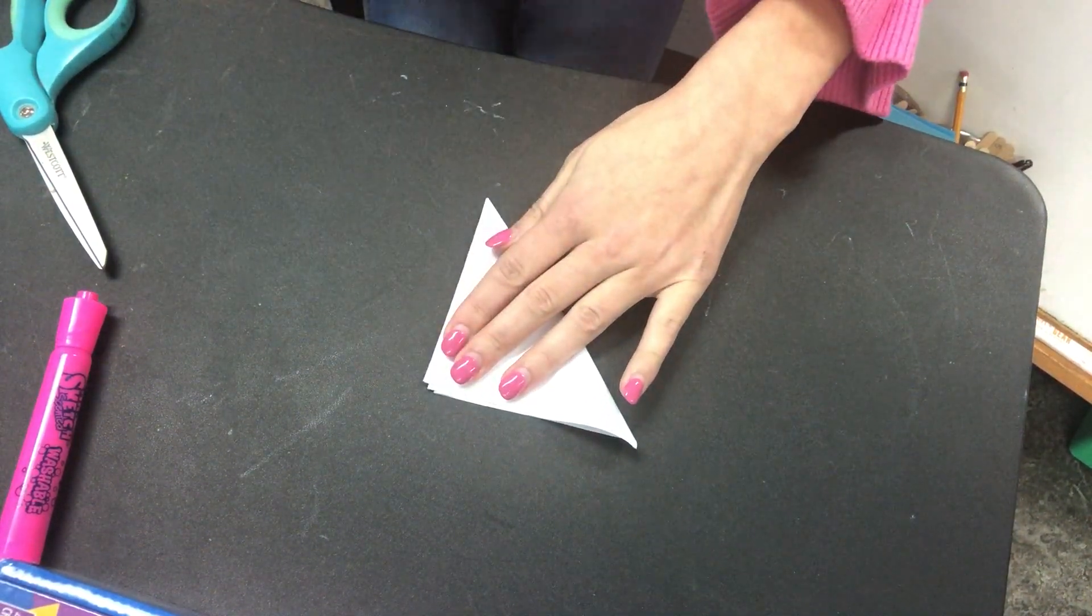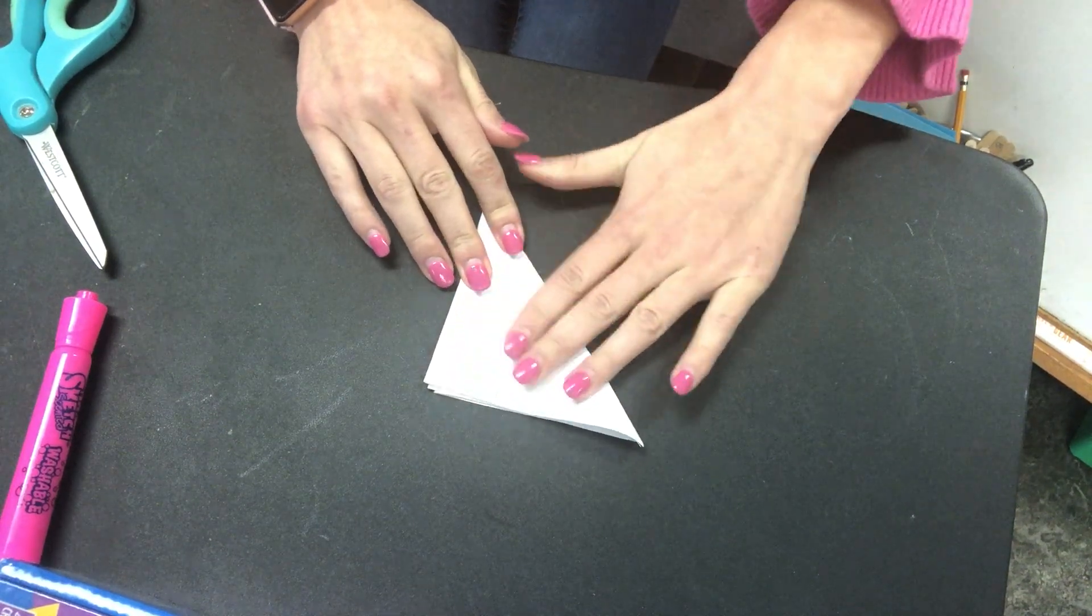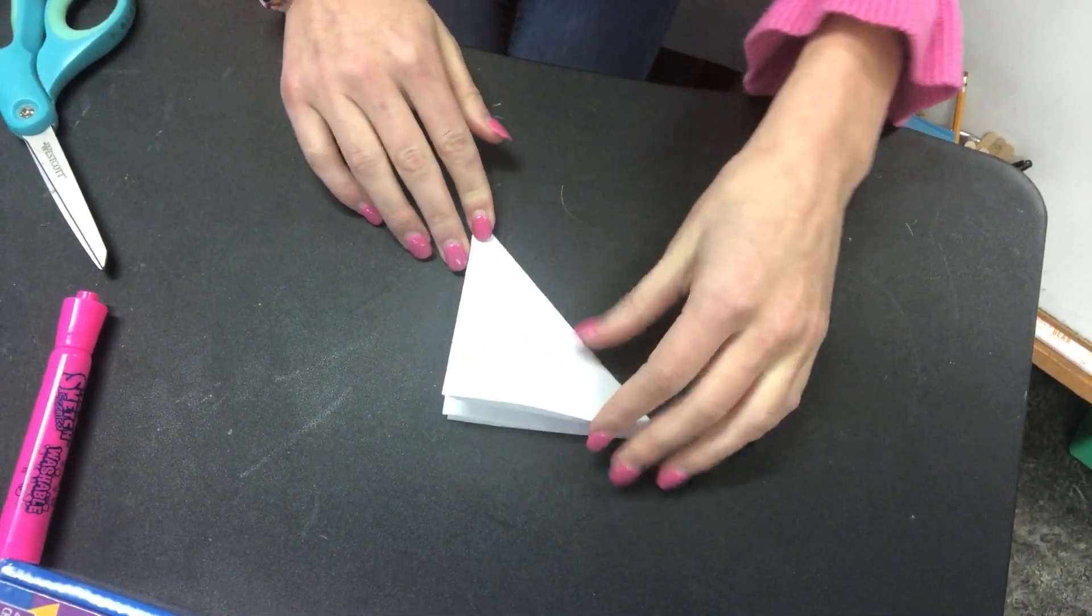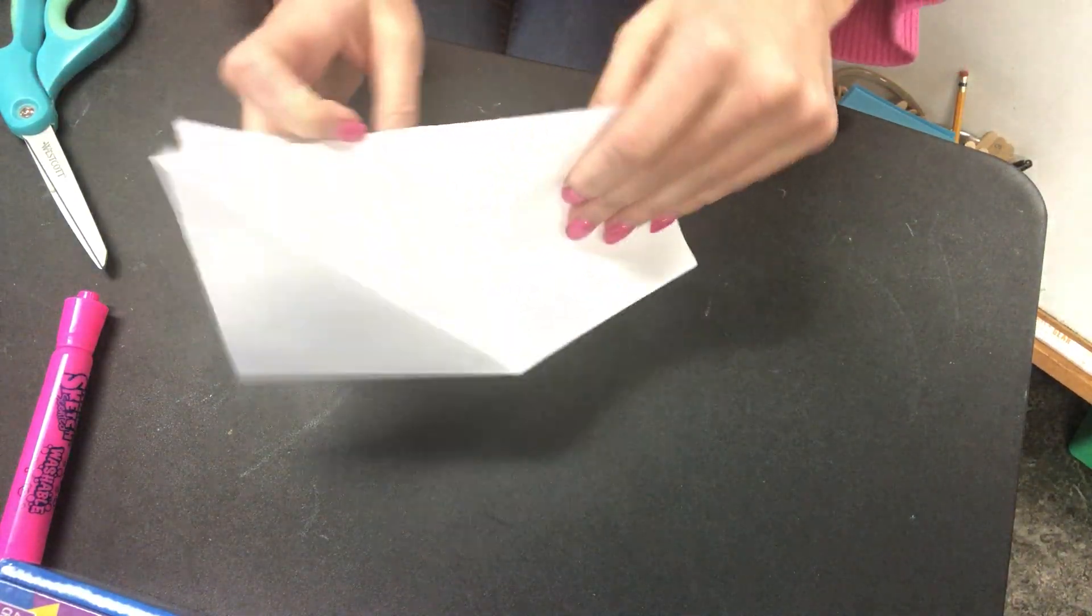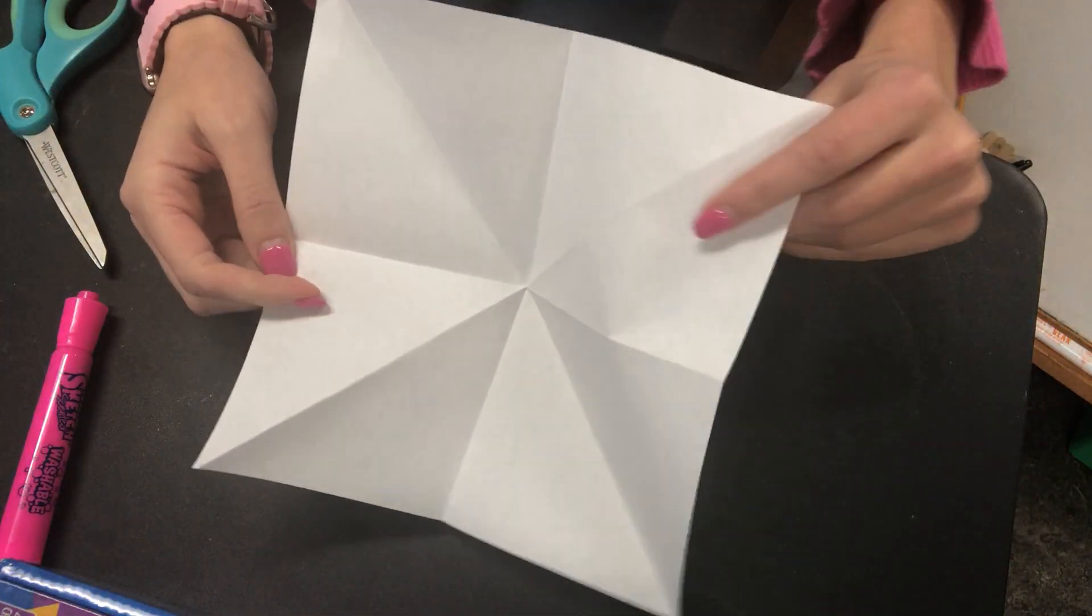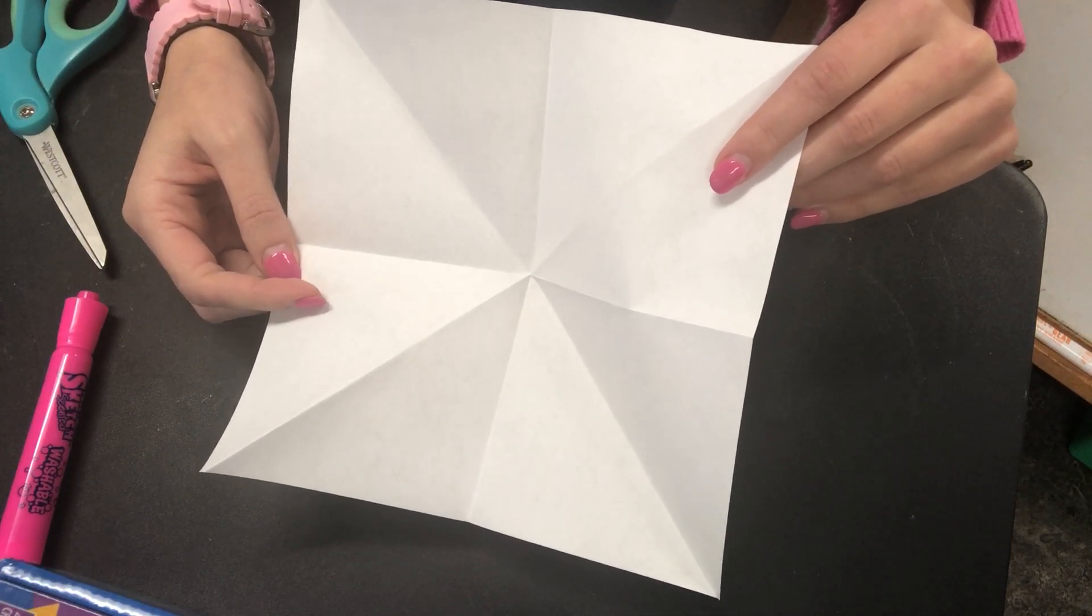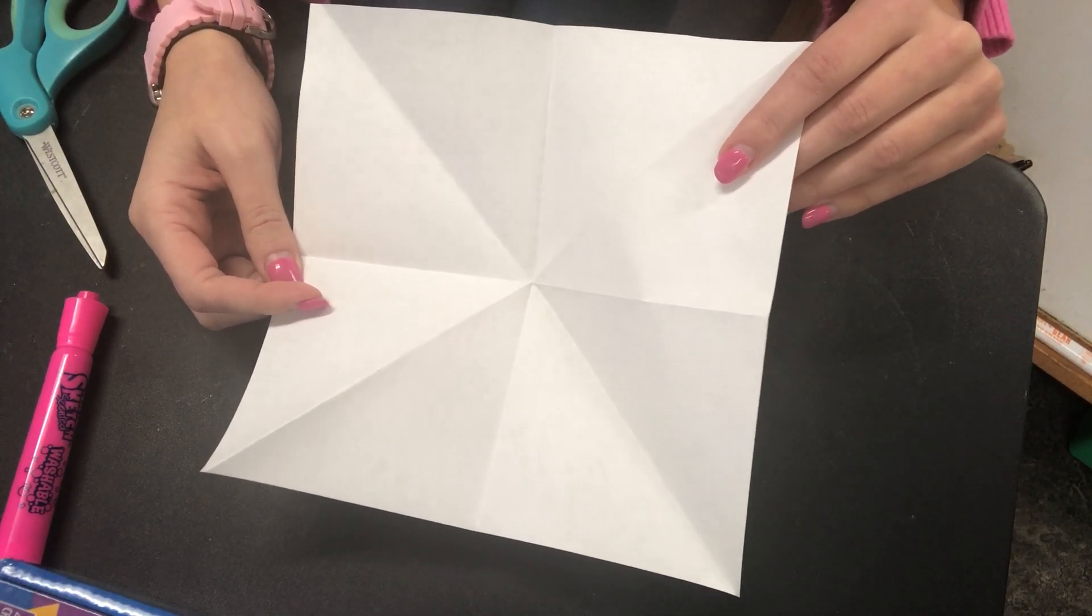I'll show you how to double check that. Now I'm gonna flatten it into a triangle and I'm gonna make my crease and squish it down. Now to check that you did it the right way, if I open this up, can you see how all of my lines point to the middle? That's how you know you did it the right way.